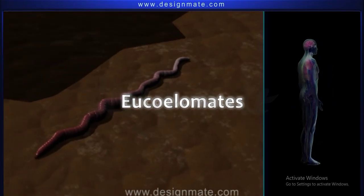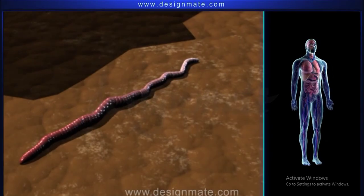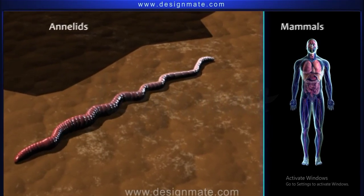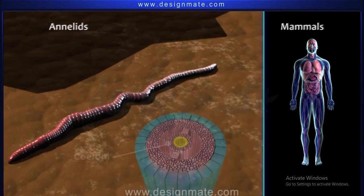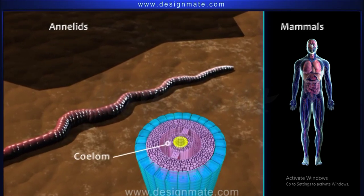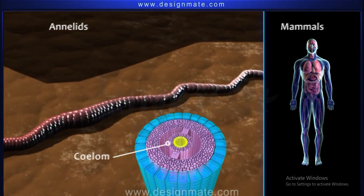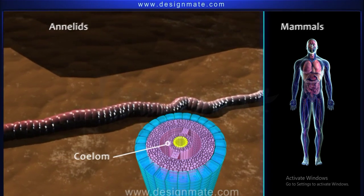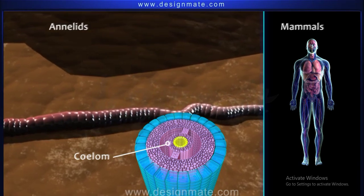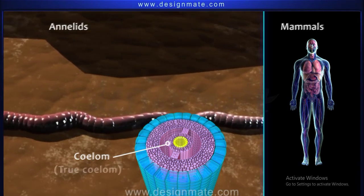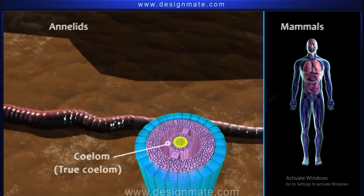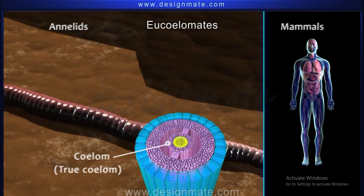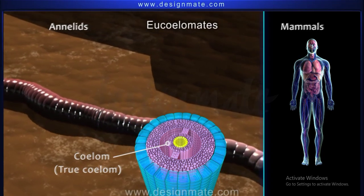Eucoelomates. From annelids to mammals, the body cavity or coelom is lined by mesodermal peritoneal layers. This type of coelom is called True Coelom, and animals possessing such coelom are called Eucoelomates.